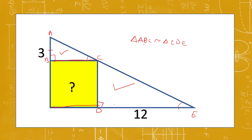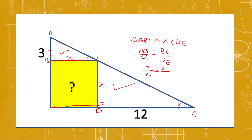When two triangles are similar, their sides are proportional. So AB upon CD equals BC upon DE. Now let's say the side of the square is x, so CD equals x and BC also equals x because this is a square. We know the value of AB is 3 and the value of DE is 12.